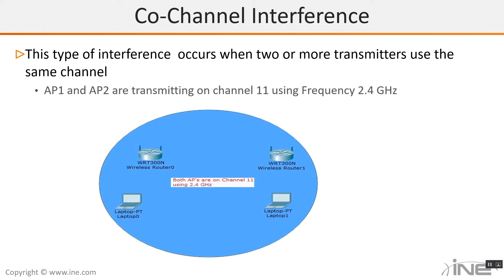Co-channel interference occurs when two or more transmitters use the same channel — like AP1 and AP2 transmitting on the same channel, in this case channel 11 using the 2.4 GHz frequency. They're in close proximity to each other where their signals are overlapping completely between each other.